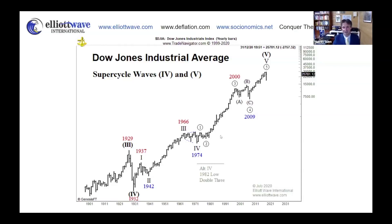That speaks to one of the most important rules Elliott discovered: in an impulse wave, wave three very often tends to be the longest wave of the structure. Out of a five-wave up move, wave three is very often the longest and strongest. Wave five, on the other hand, tends to be a little bit weaker and shorter, with underlying issues in terms of breadth. It makes sense from an Elliott Wave standpoint that the fifth wave since 2009 is shorter on this log chart than the third wave from 1982 to 2000.